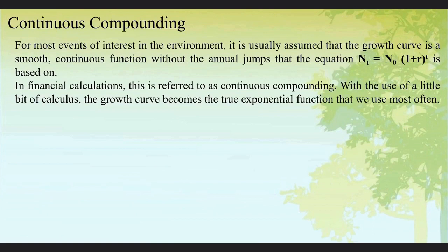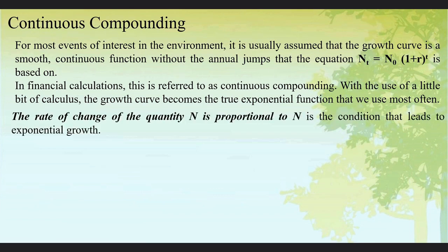Now, continuous compounding. For most events of interest in the environment, it is usually assumed that the growth curve is a smooth continuous function without the annual jumps that the equation Nt = N0(1+r)^t is based on. In financial calculations, this is referred to as continuous compounding. With the use of a little bit of calculus, the growth curve becomes the true exponential function we use most often. The rate of change of quantity N is proportional to N is the condition that leads to exponential growth.